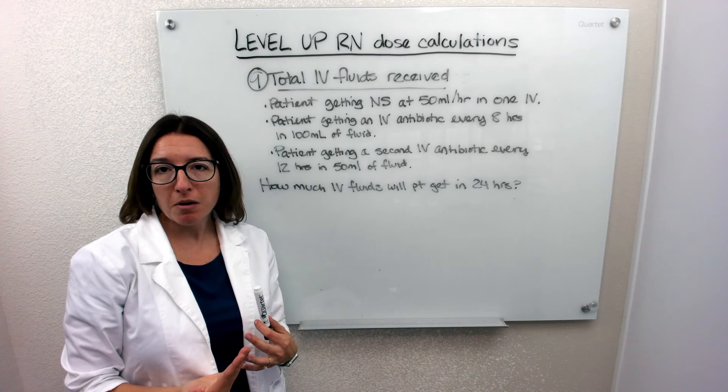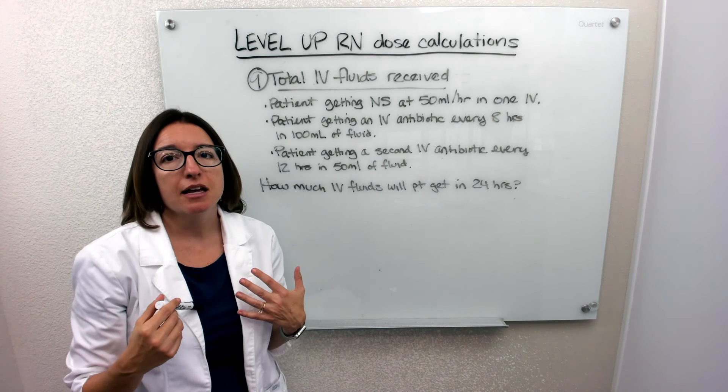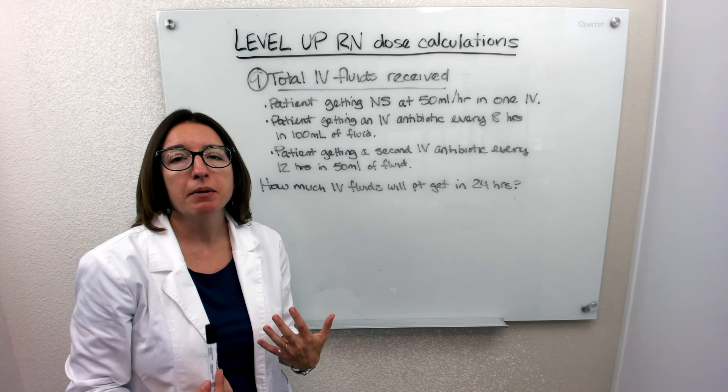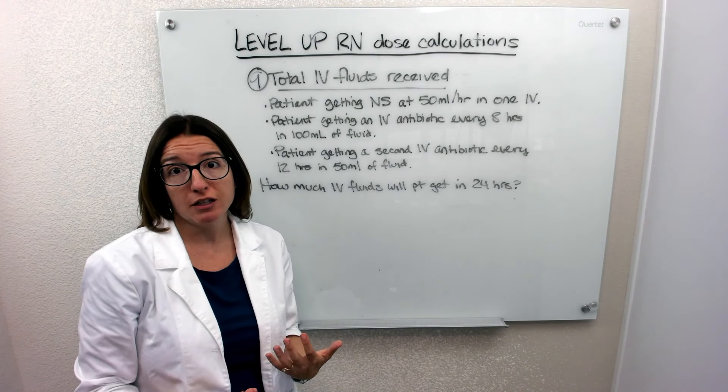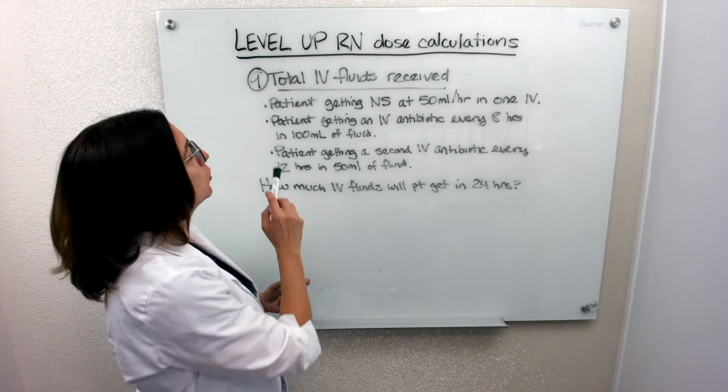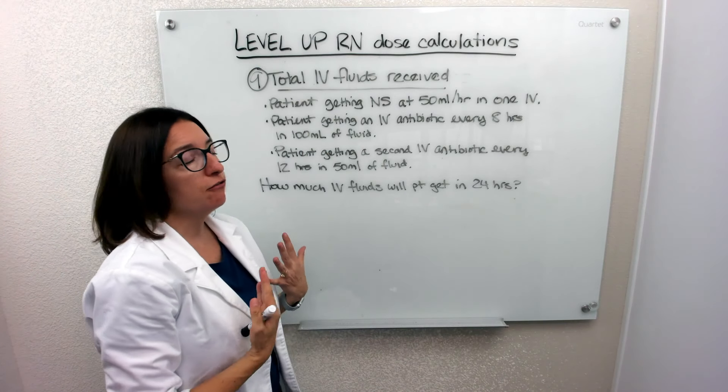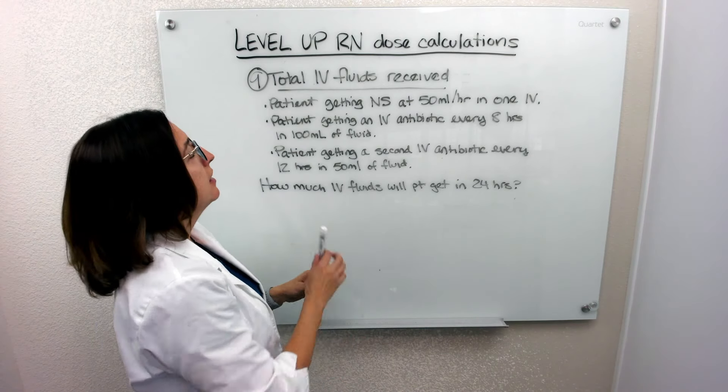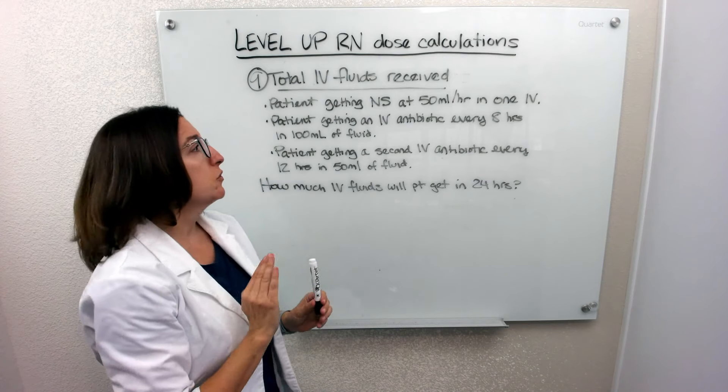All right. This is the last problem I'm going to go over in this video. It's number nine. And this is a problem that deals with calculating how much IV fluids a patient is getting in total when they're receiving multiple infusions. So in this problem, we're told that the patient is getting normal saline infused at 50 milliliters an hour in one of their IVs. And then in another IV, they're getting an IV antibiotic infused every eight hours.